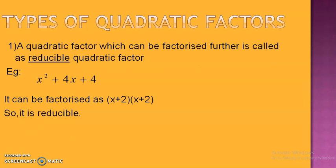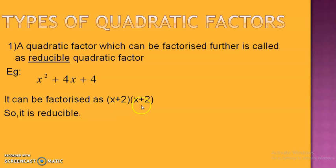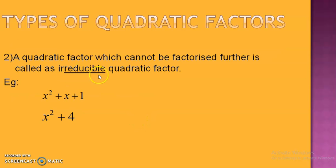The quadratic factors can be further factorized, or they may not be. Depending on this, we have two types. A quadratic factor which can be factorized further is called a reducible quadratic factor. For example, x squared plus 4x plus 4 can be factorized as (x plus 2)(x plus 2) — both are linear factors. A quadratic factor which cannot be further factorized is called an irreducible quadratic factor, such as x squared plus x plus 1 and x squared plus 4.